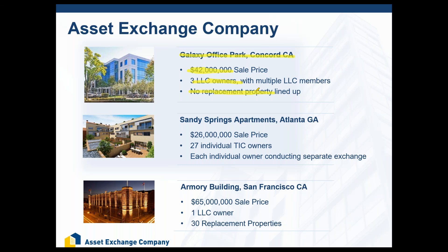When you do a 1031 exchange, you cannot be in constructive receipt of your sale proceeds. It doesn't matter if you're selling a $42 million building or a $420,000 building — when that property sells, you cannot touch the money. The money comes to us and sits in a neutral third-party account until you are ready to purchase the replacement property. Because the IRS says so. You get this great tax break, this deferral of taxes, but you've got to follow the rules — just like your 401k or IRA.